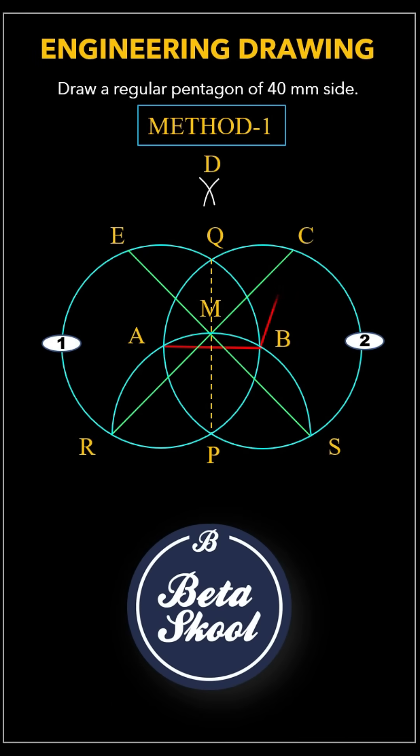Finally, join points B, C, D, E, and A in sequence. And there we have it. The regular pentagon is complete.